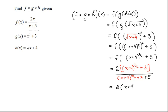So, this is equal to 2 times x plus 4 to the 7 over 2 plus 6 all over x plus 4 to the 7 over 2 plus 8. So, now, let's conclude.